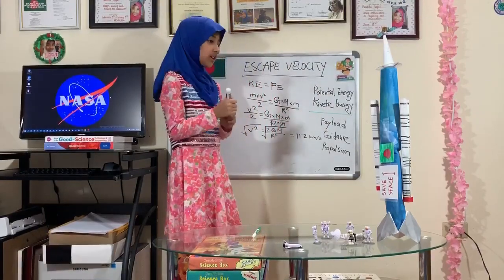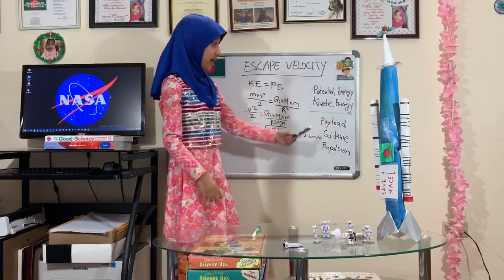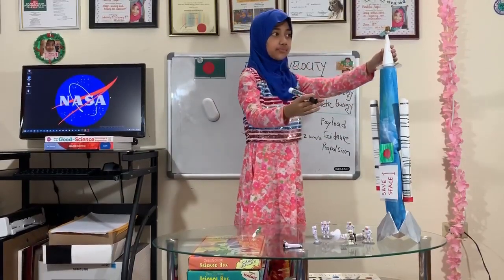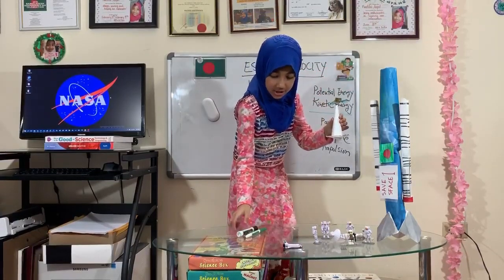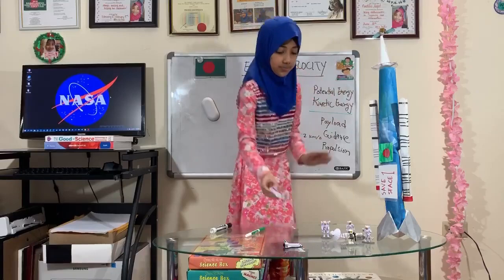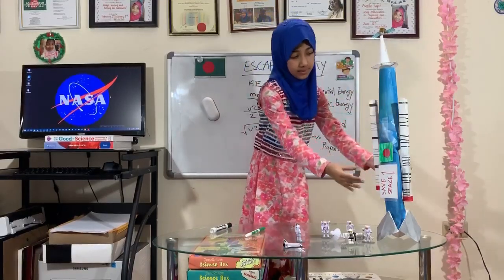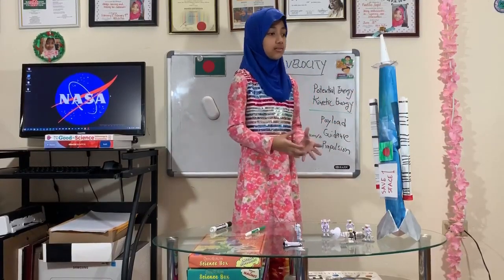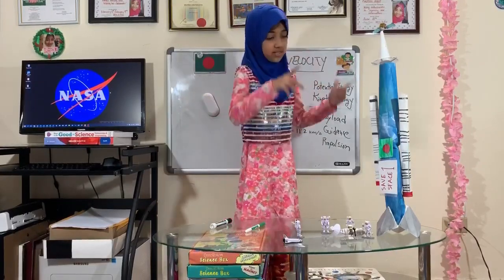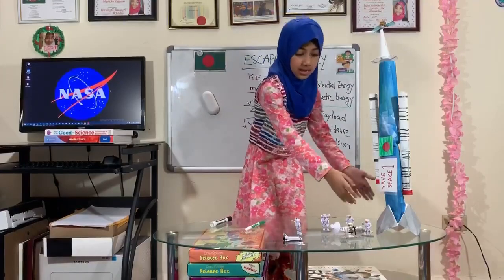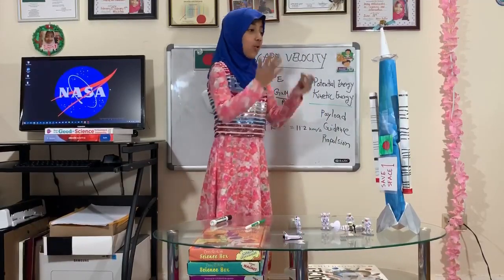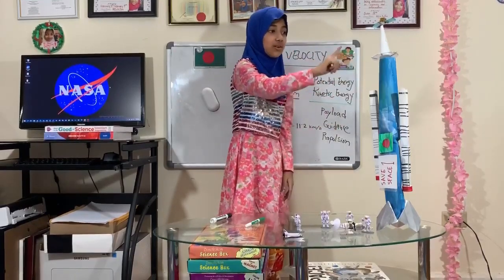Now, this rocket also has three different parts: the payload, the guidance system, and the propulsion. The payload is here — this is where all the astronauts sit. Here is my guidance system. These parts along the body are fuel tanks that help the rocket — when they're done, they are left behind and not used to go into space. And this is the last part: the propulsion. So now we've figured out how much speed we need to send this rocket up into space.